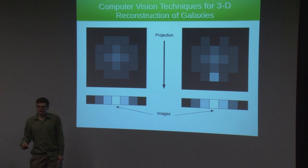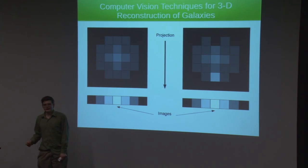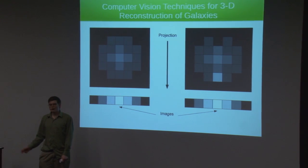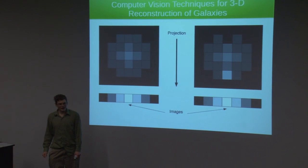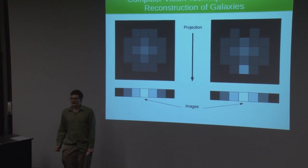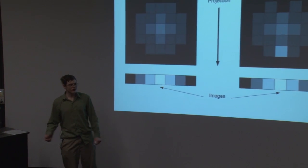Now, one difference between images of galaxies and other sorts of images that you see is that you can't go around to the other side of the object to get a different view. Millions of light years is a little far to go for one picture.